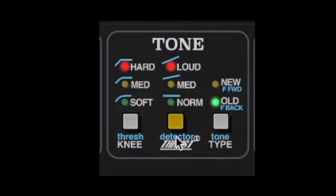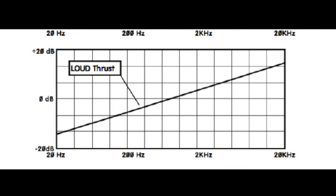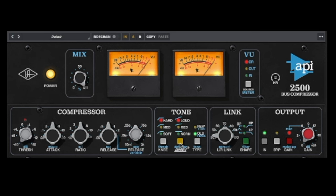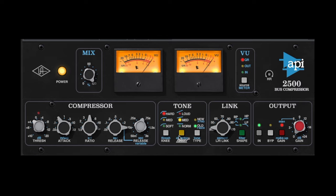A common sidechain feature is a high-pass filter, because you don't want the compressor to hear too much bass. API took this a bit further with the thrust setting. Norm is basically bypassed. Loud, instead of high-passing the sound, adds a shelf that goes from the bottom all the way up, giving a boost in the highs and a dip in the lows — resulting in much more transparent compression. Medium gives a similar effect with a little dip in the lows and a boost in the highs, while the mid-range stays flat. I personally keep this on loud most of the time, both for drums and the mix bus.